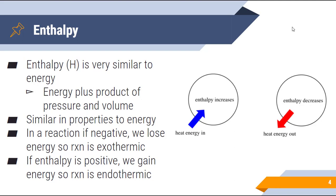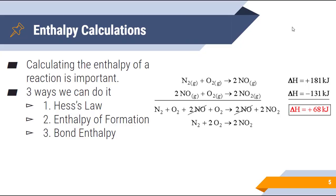We need to be able to calculate this enthalpy. Calculating the enthalpy of a reaction tells us if it's endo- or exothermic, and we can use Le Chatelier's principle with this information. There are three ways we can do it. The first is Hess's law, which takes smaller equations we know the enthalpy for and combines and manipulates them to get a larger balanced chemical equation. We can also look at enthalpy of formation — given for each species — and bond enthalpy, which is the energy present in each individual bond in the molecules.